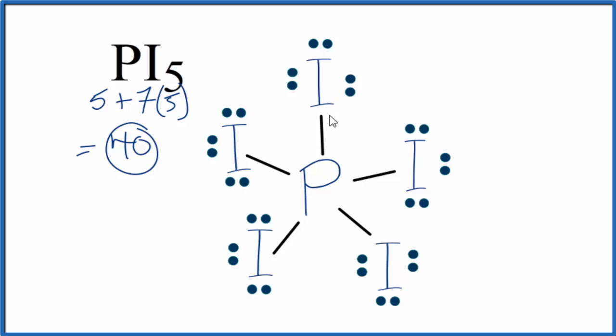Then I put the remaining electrons around each iodine to complete the octet. Once done, all the iodine atoms have eight valence electrons and the phosphorus in the center has more than eight, but that's okay—it can have an expanded octet. If you count up all these electrons, you get 40, so we've used all of our electrons.